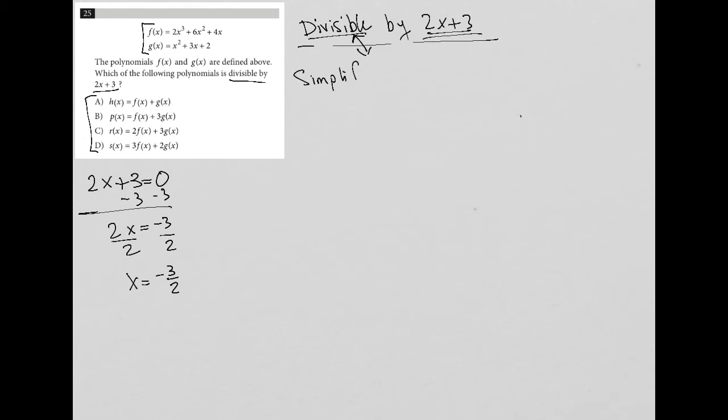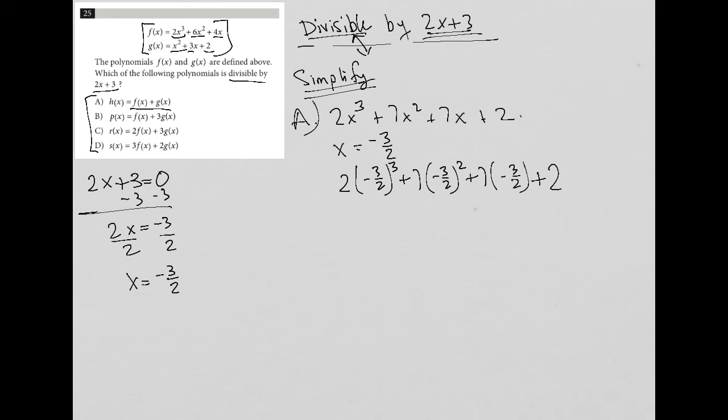So now I'm going to use this x equals negative 3 halves. I'm going to simplify answer choice A. So answer choice A says f of x plus g of x. I'm going to add these together. I get 2x cubed because that's the only cubed term. And then I get 7x squared because of adding 6x squared plus x squared. And then I get 7x by adding 4x and 3x. And then I get 2. And then the way I test it is I say if x equals negative 3 halves, do I get zero for this polynomial? So I get 2 parentheses negative 3 halves cubed plus 7 negative 3 halves squared plus 7. And again, this is the calculator section. So you could definitely put this straight into your calculator and it would make it a lot easier. What we'll find when you put this into your calculator is that it does not equal zero and therefore choice A is gone.